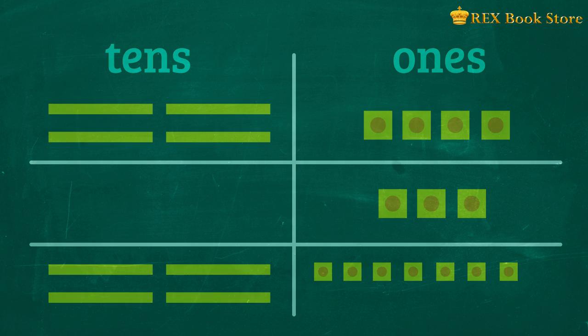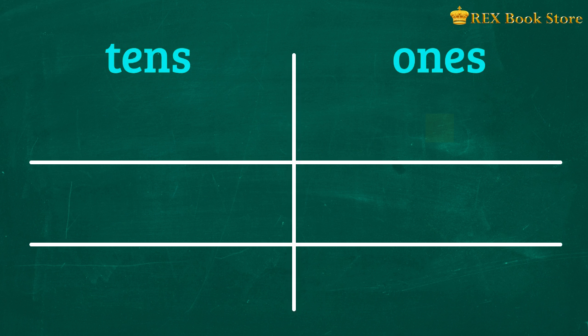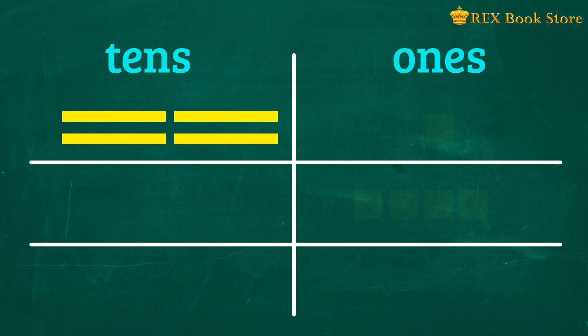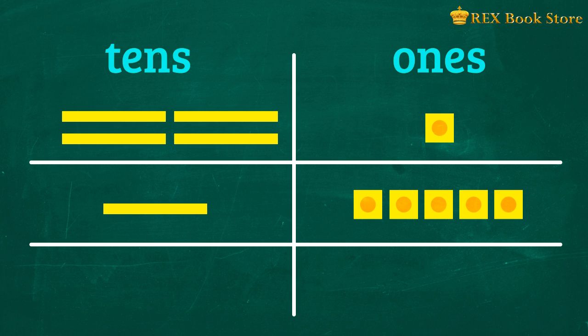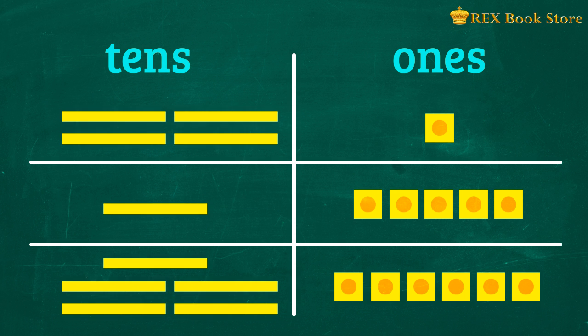Let's do that again. What is 41 plus 15? To represent 41, we place 4 rods in the tens column and 1 unit in the ones column. To represent 15, we place 1 rod in the tens column and 5 units in the ones column. Now let's put them together. How many ones do we have? We have 6 ones. How about tens? We have 5 tens. 5 tens, 6 ones is 56. 41 plus 15 is equal to 56.